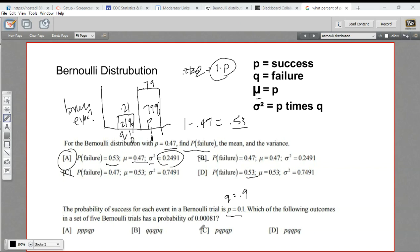And then it says which of the following outcomes in a set of five Bernoulli trials has a probability of 0.00081? So you're testing something that can either be yes or no. It's yes, 0.1 of the time. It's no, 0.9 of the time. And you want to know which one of these arrangements, for example, getting three p's in a row, then a q, then a p, has this exact probability.